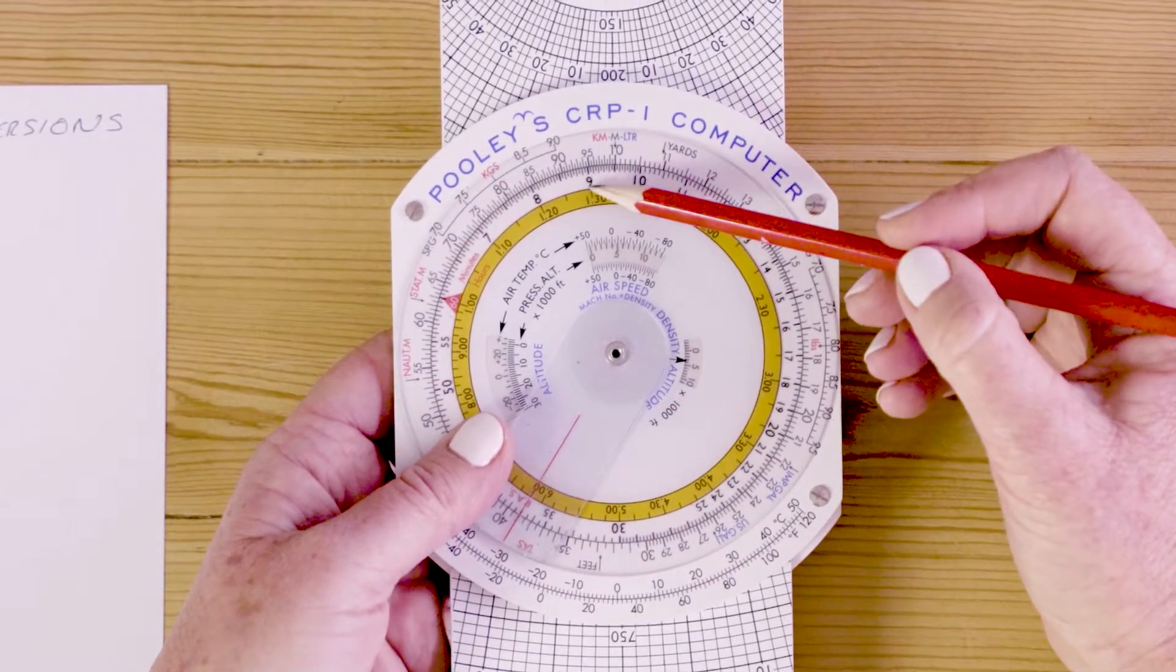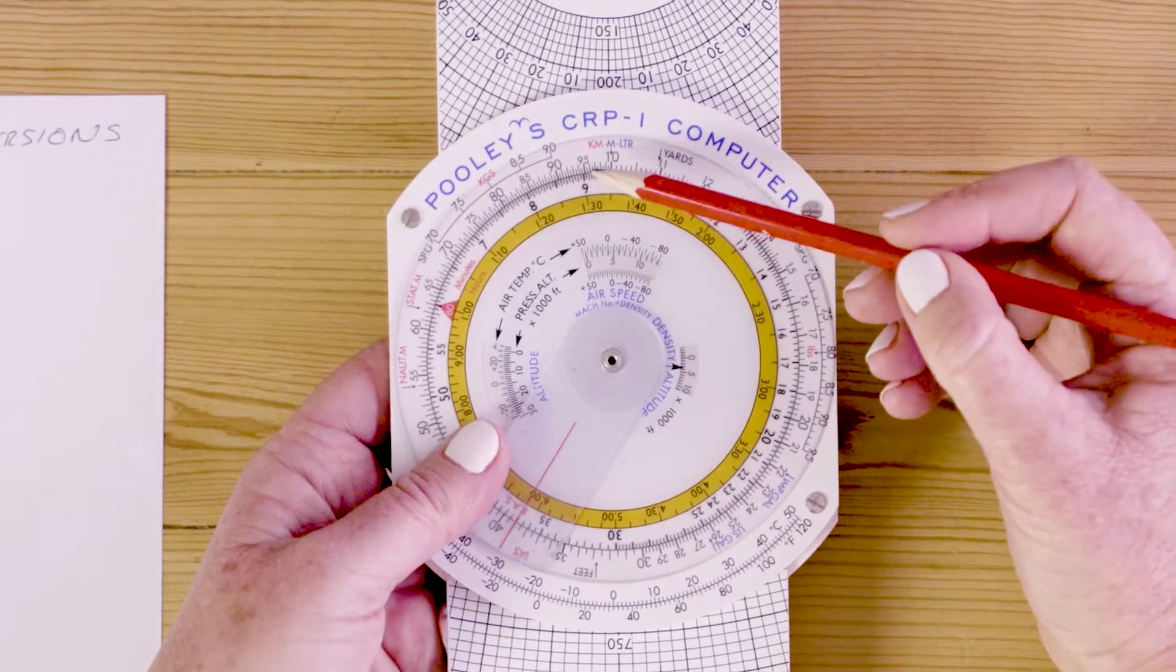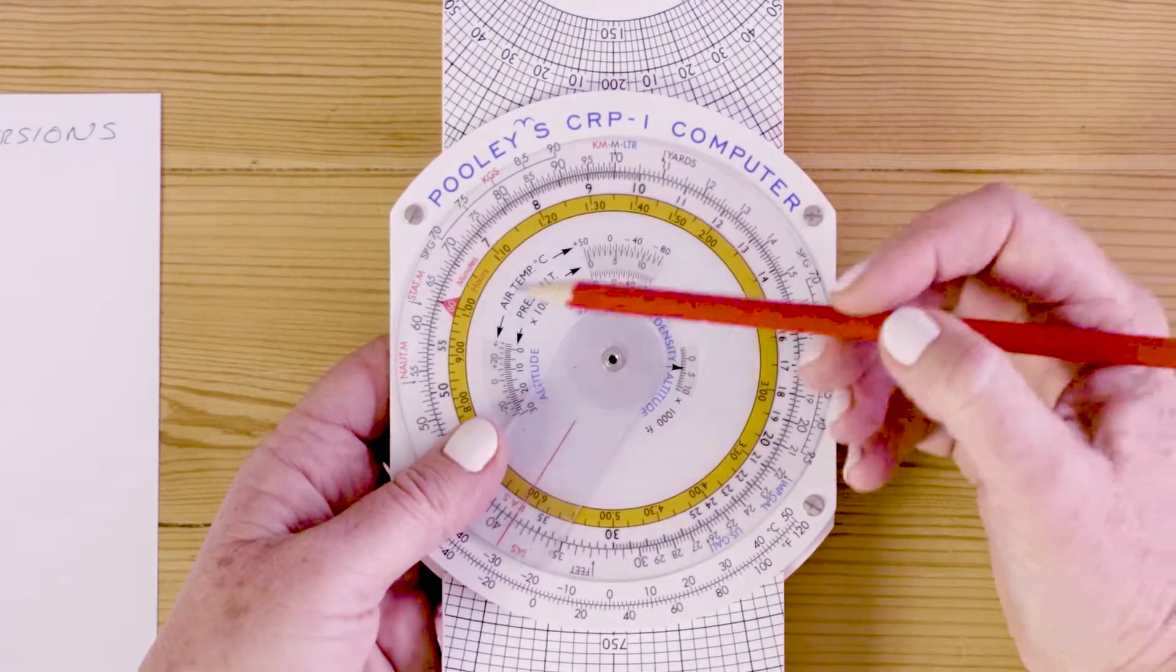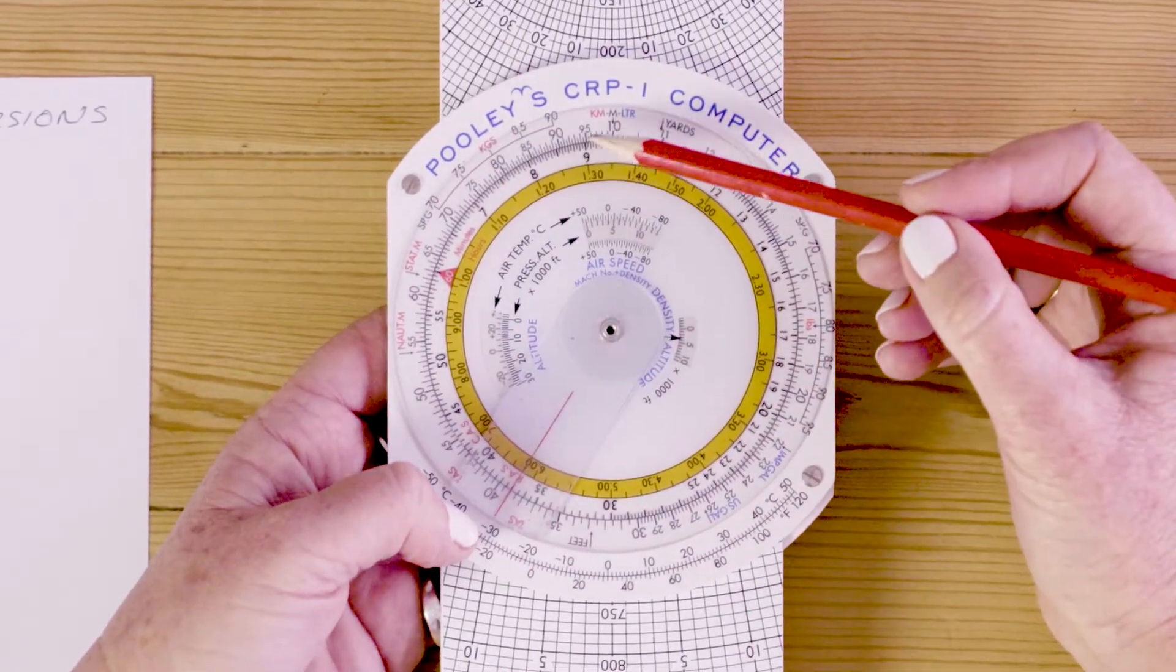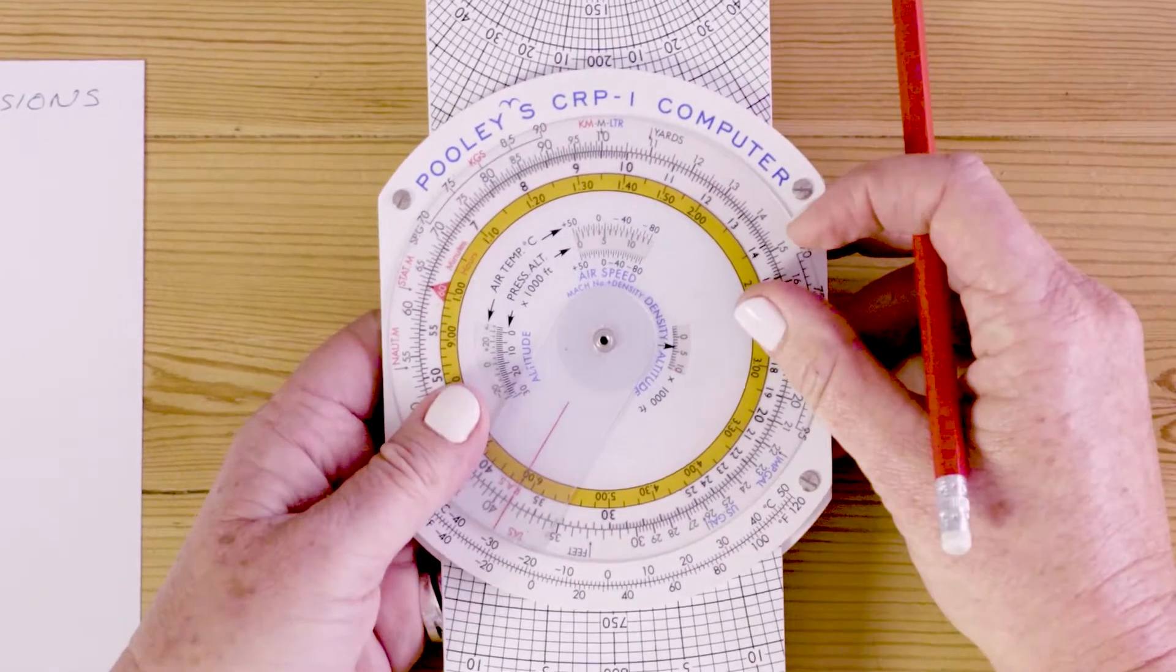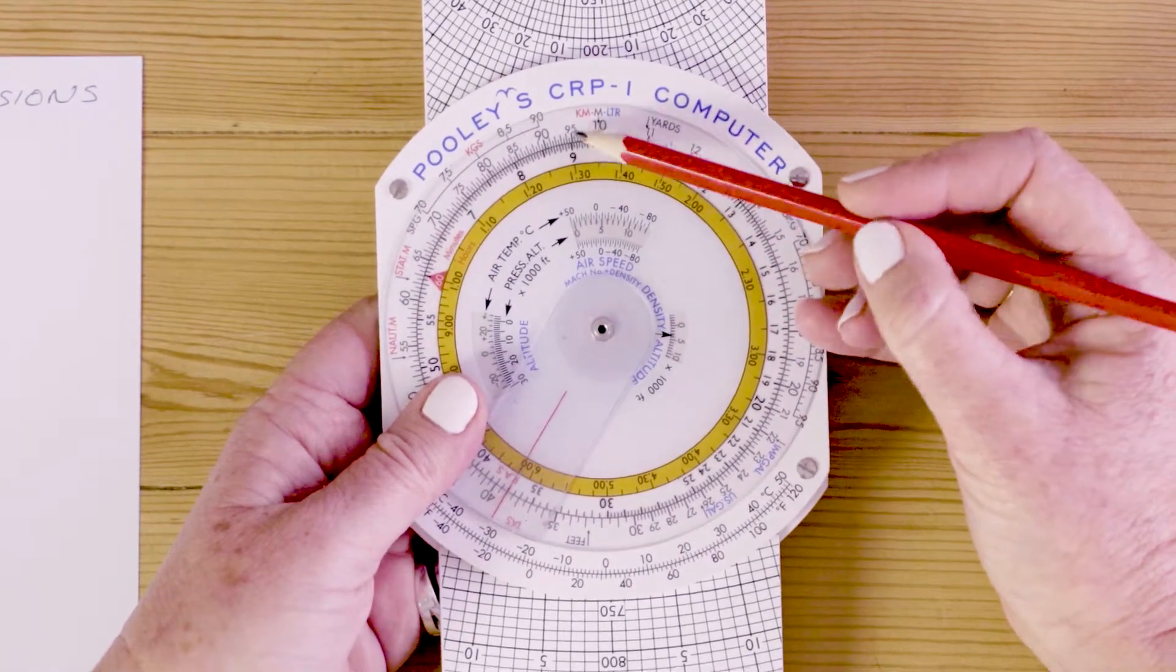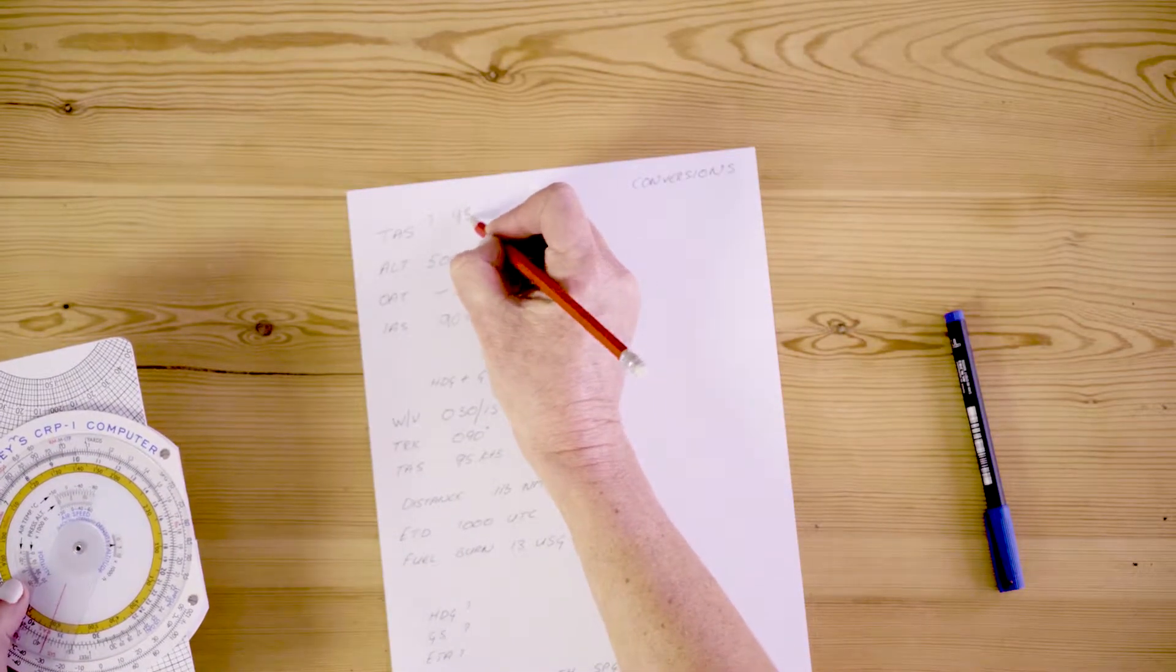All I do, I've put the clues in, all I do now is find my indicated airspeed on the inside. Remember that nine is a magic number, it could be nine or 90, and I read the outside. It tells you you read true airspeed on the outside. I'm looking for a slightly higher number so my true airspeed is going to be 95 knots. Fantastic! Now I know my true airspeed is 95 knots.